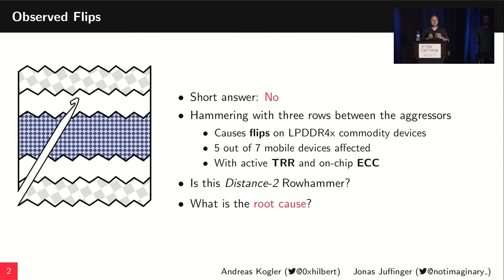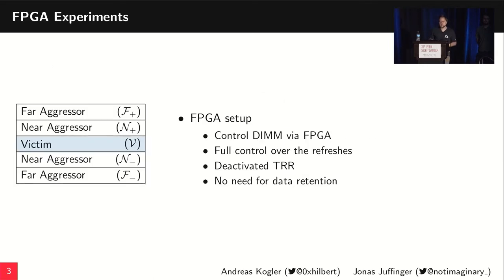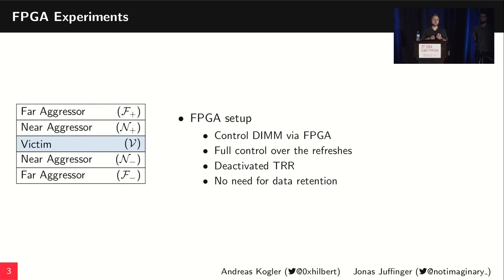So was this a distance-2 Rowhammer now possible on commodity devices, or is the root cause something completely different? To find out, we composed a few experiments in the paper. We first built an FPGA setup and used one of those DIMMs in that FPGA setup. The benefit of this setup is that we have complete control over the refreshes and can even detect TRR. The memory is also not used for system memory, so we don't need to keep the data valid.